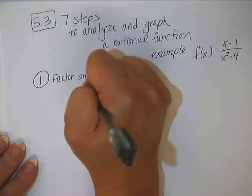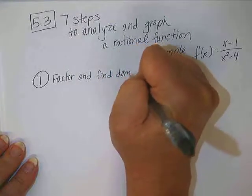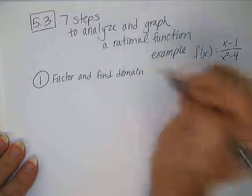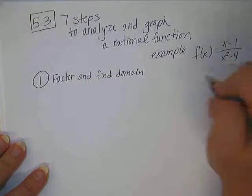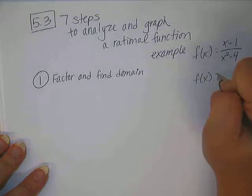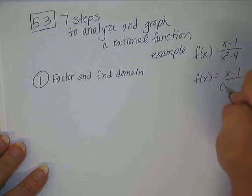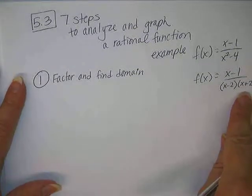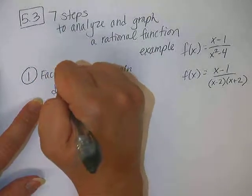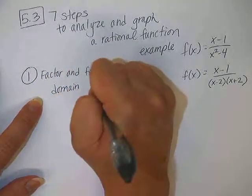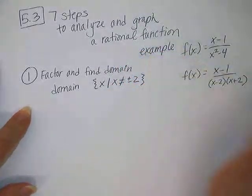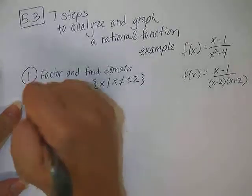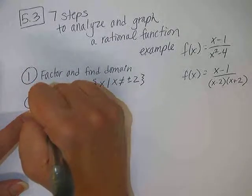Step 1. Factor and find domain. Okay. So does anything factor in our problem here? Yes, it does. So the numerator does not factor, but the denominator is x minus 2, x plus 2. So that helps us find the domain. The domain is x, such that x cannot equal plus or minus 2.